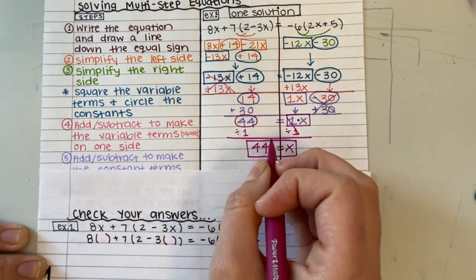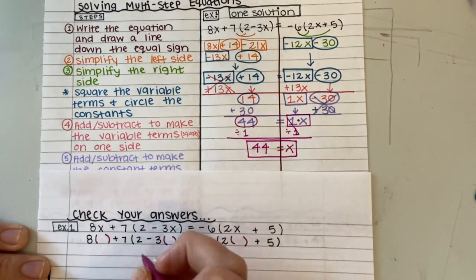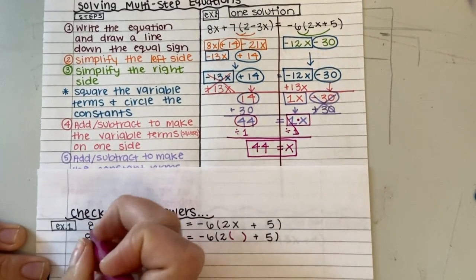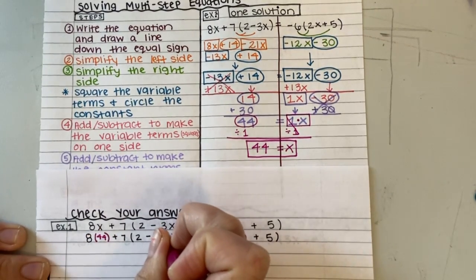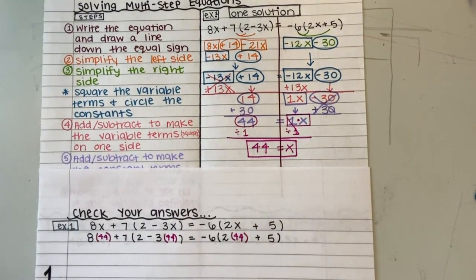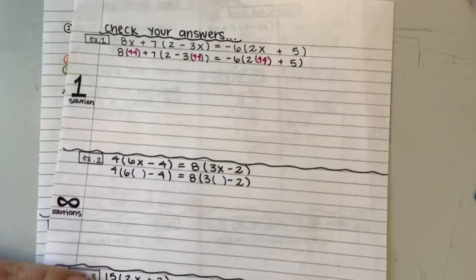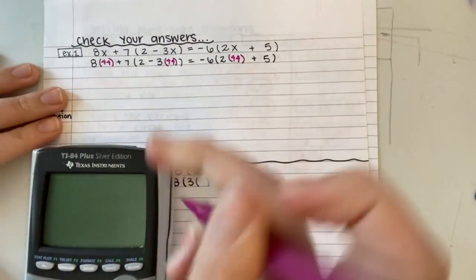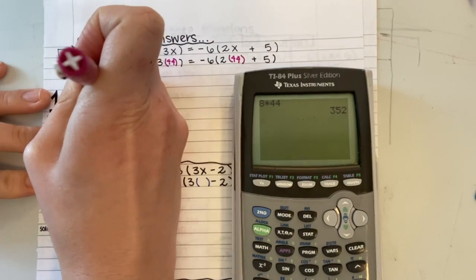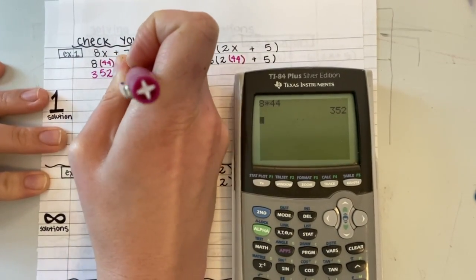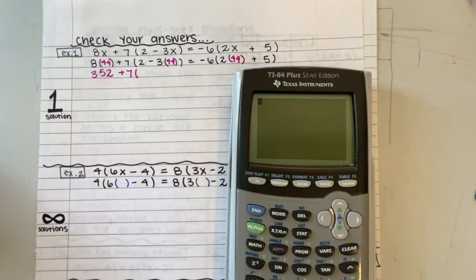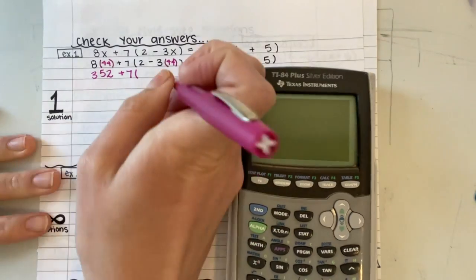When we're checking our answer, what we're doing is we're just replacing x with the number we got. So in the spot of x, I drew these parentheses so I knew exactly where to plug in this 44. So I'm going to plug in 44 here and here and here. And then I'm going to use my calculator and I'm going to let it help me ensure that I got the correct answer. So we have 8 times 44, and I get 352 plus 7.